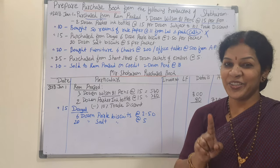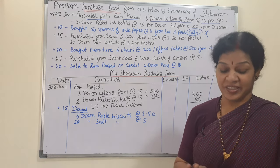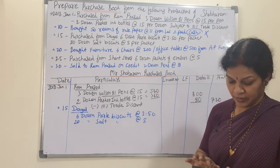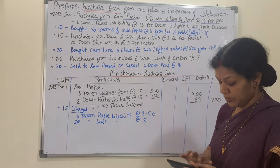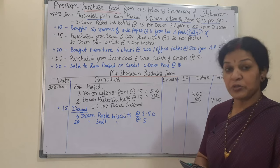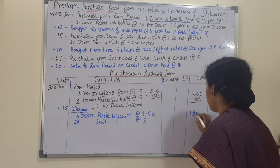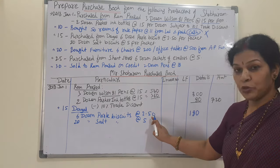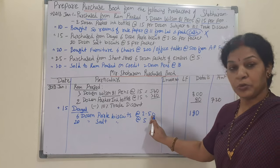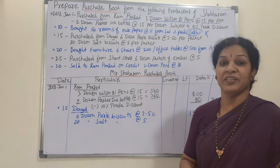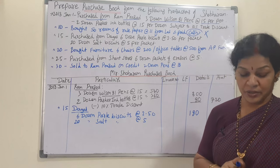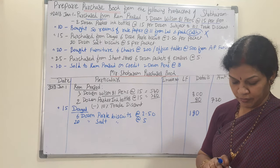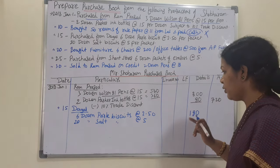Calculating: 6 dozen means 12 × 6 = 72 packets. At the rate of 2 rupees 50 paisa, 72 × 2.50 = 180 rupees. In the same way, 20 dozen salt biscuits: 12 × 20 = 240 packets. At the rate of 5 rupees, 240 × 5 = 1200 rupees.